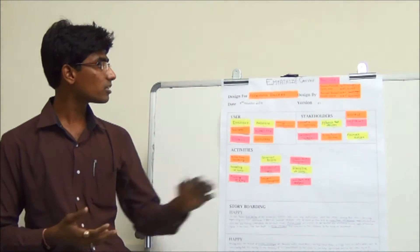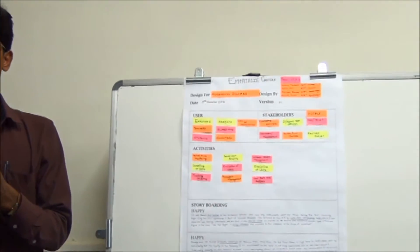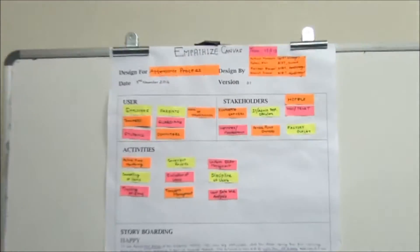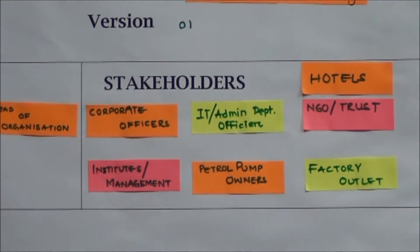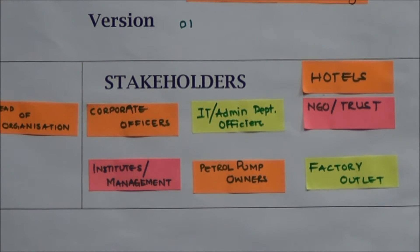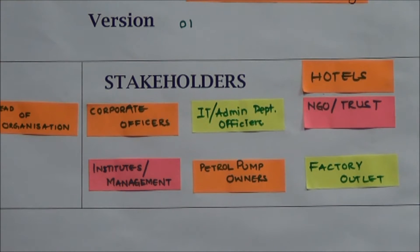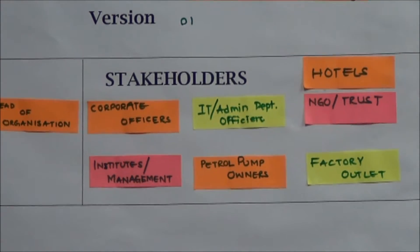After the user, we can list out the stakeholders. Stakeholder means the person or institute which is directly or indirectly related with this system or design. In stakeholders, we have listed corporate officers who can purchase this system and keep records of their employees. We have also listed hotels, NGOs, factory outlets, etc.